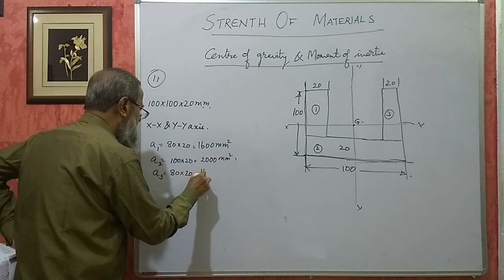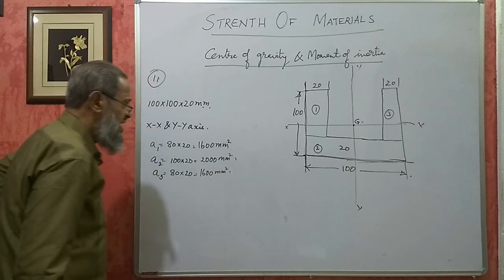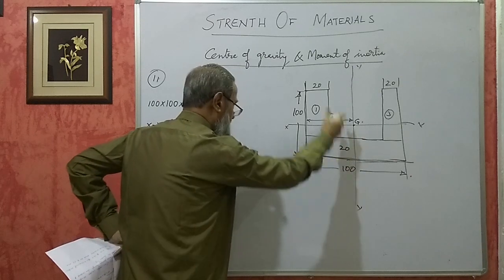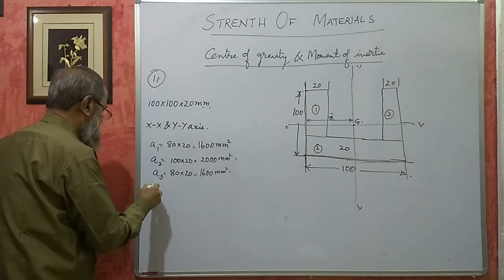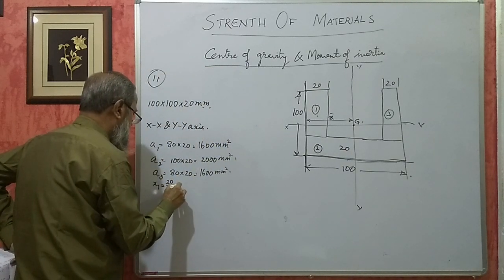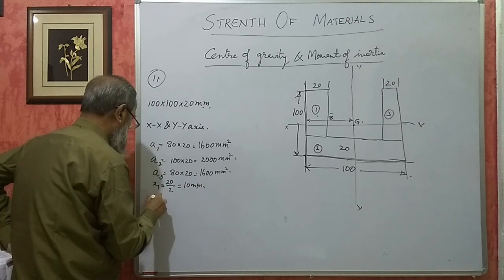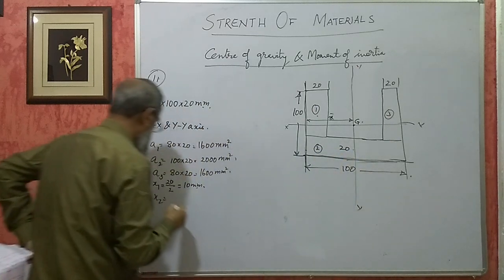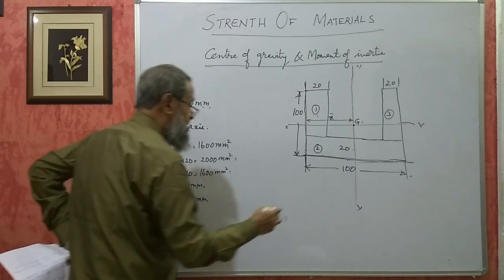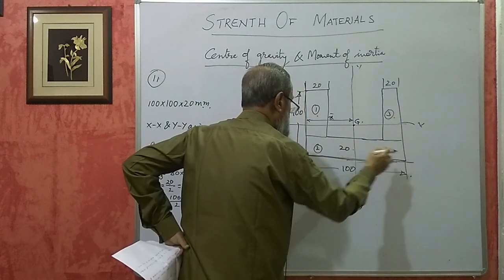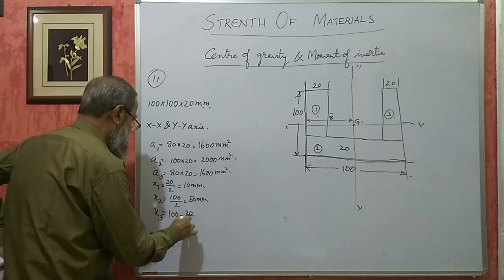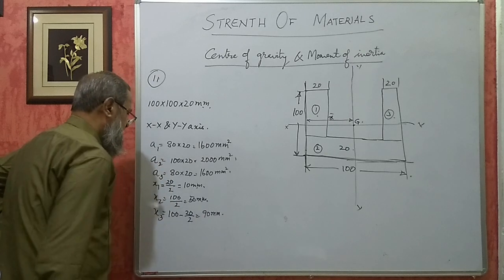A1 = 80 × 20 = 1600 mm². A3 is again 80 × 20 = 1600 mm². Now this distance is x̄. Since the section is symmetrical, x̄ will be 50 only. Even if you calculate: x1 = 20/2 = 10 mm, x2 = 100/2 = 50 mm, x3 = 100 − 20/2 = 90 mm, giving x̄ = 50 mm.